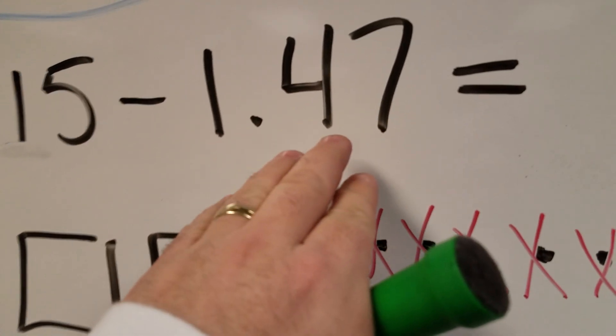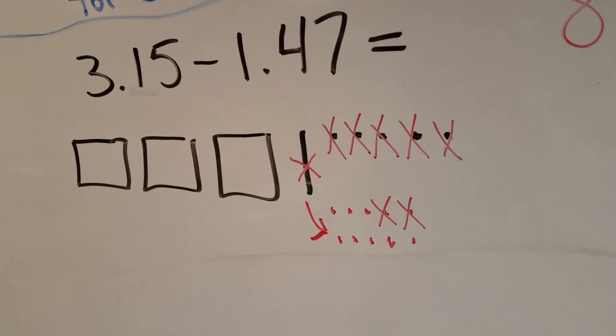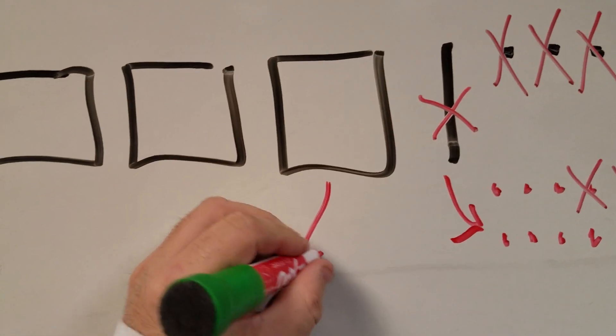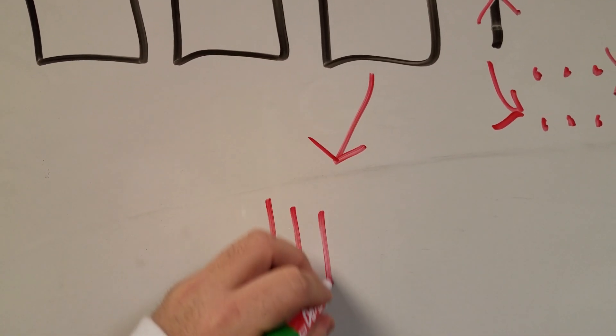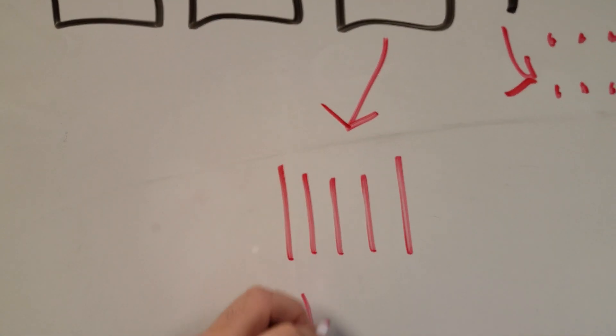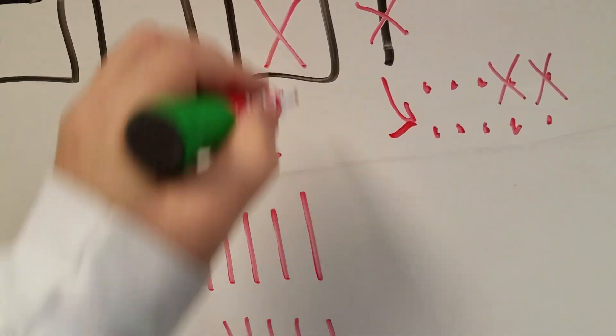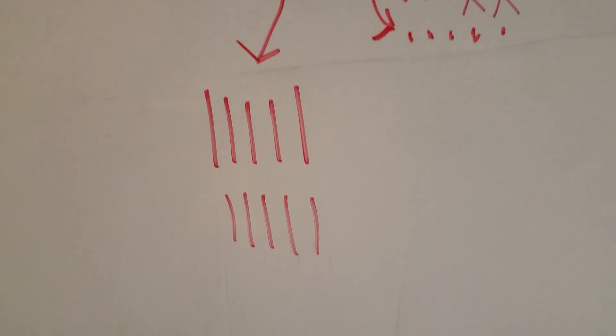The next thing I need to do is take away four tenths. I don't have any tenths left over. So what I have to do is I'm going to break up this whole into ten longs: five, six, seven, eight, nine, ten. I'm going to cross this out because I used him now. So I have ten tenths there or a whole.